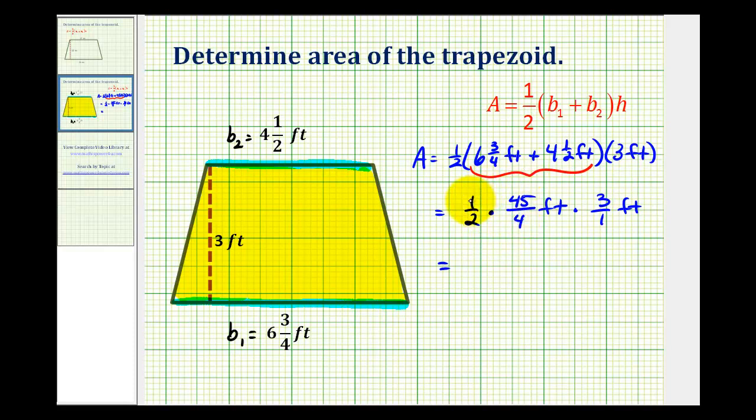So now we can go ahead and multiply. We have one times forty-five times three. That's going to be one hundred thirty-five. Denominator is going to be two times four which is eight. And then feet times feet will give us feet squared.